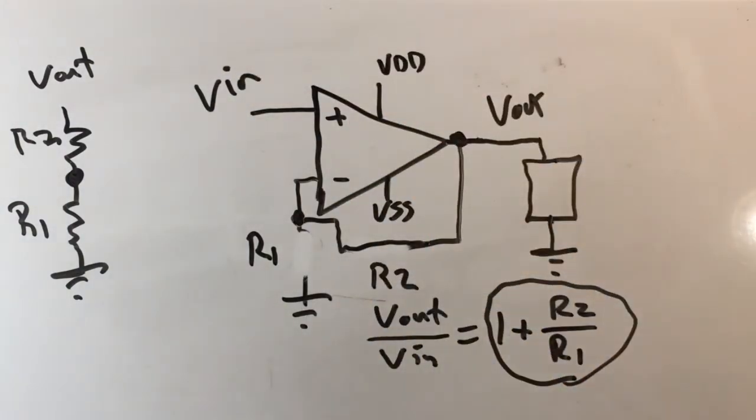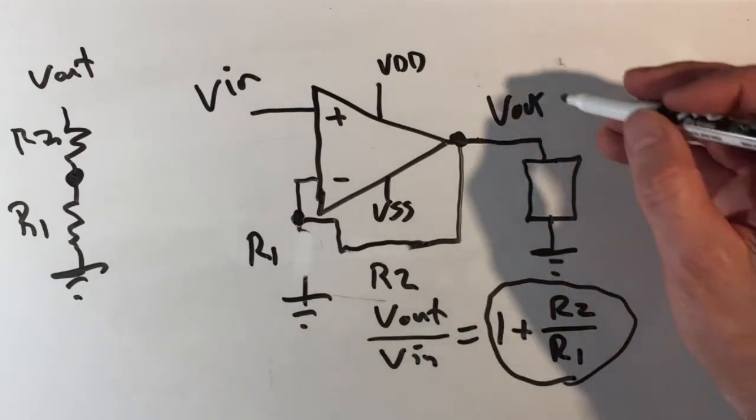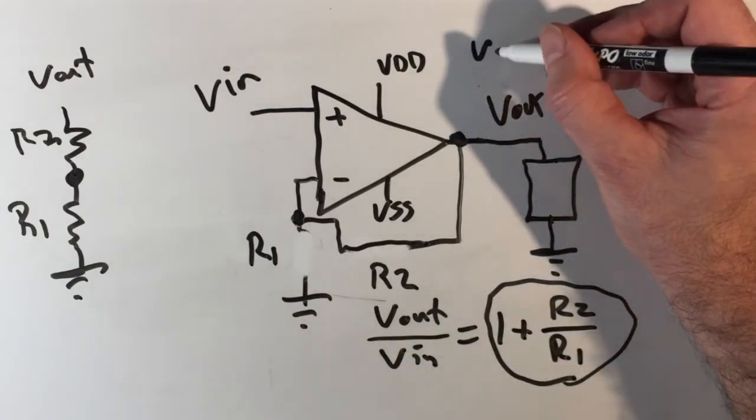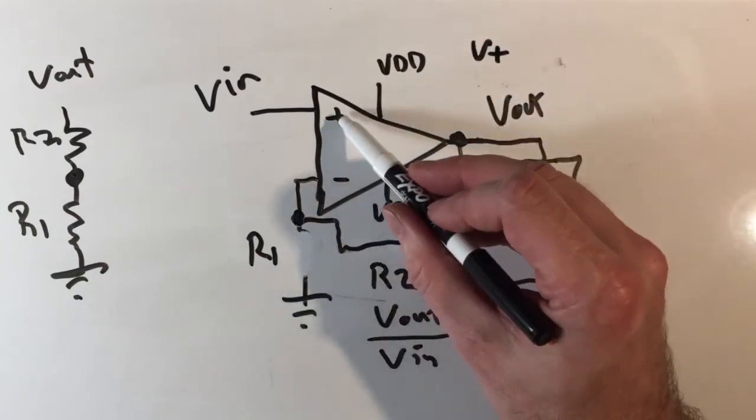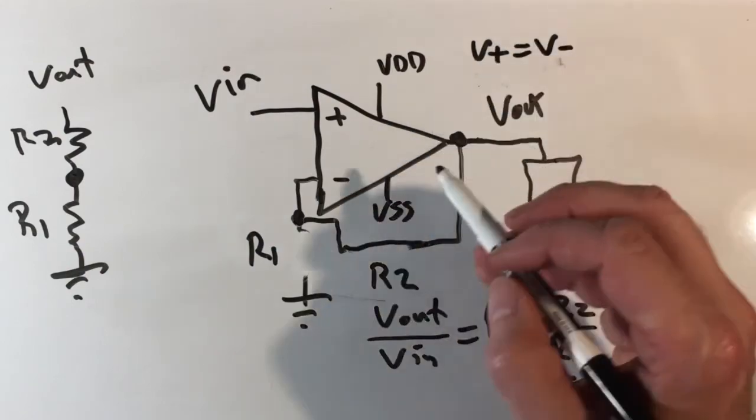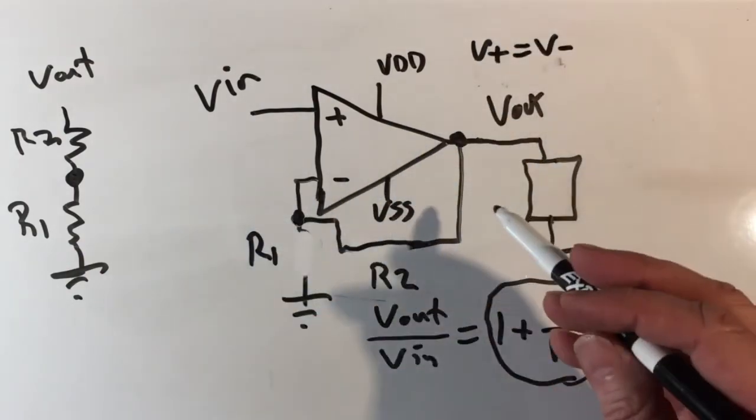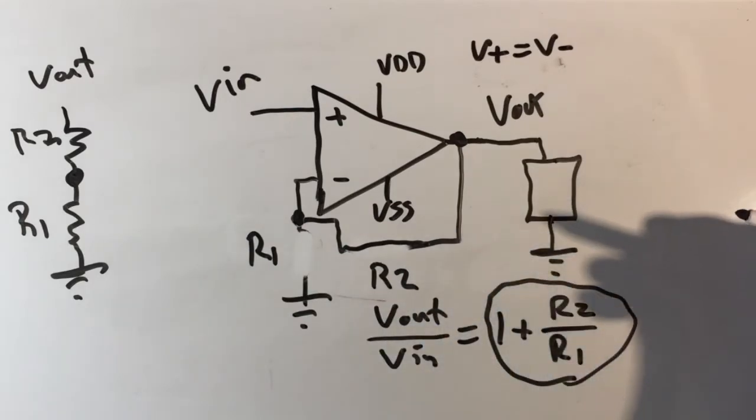We could quickly analyze this thinking about the op-amp equation. The op-amp equation says that V positive, the non-inverting input, equals V negative, the inverting input, when you're in closed loop. Closed loop means you're not saturating and the amplifier is able to do what it can do.